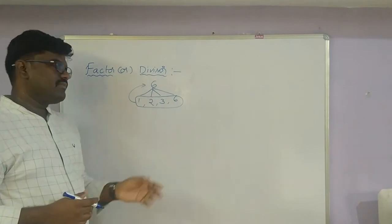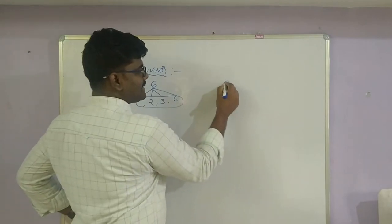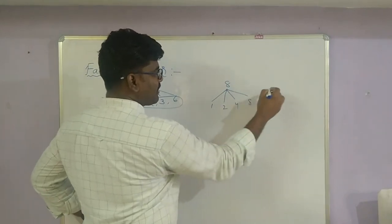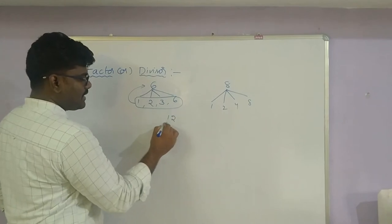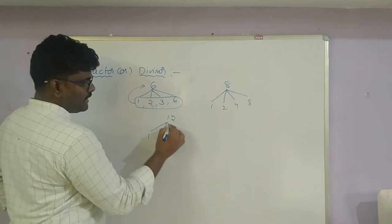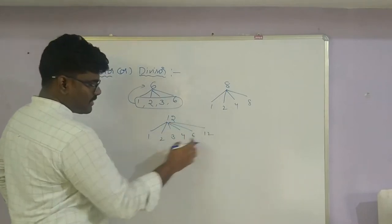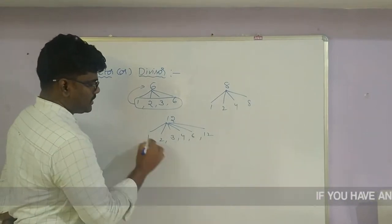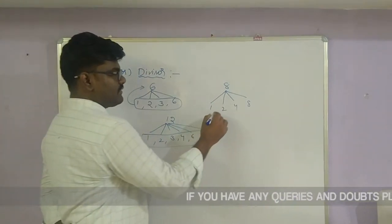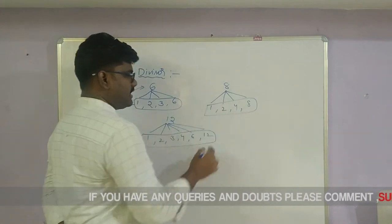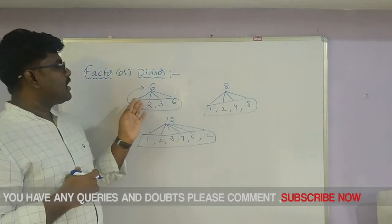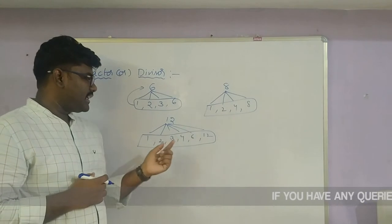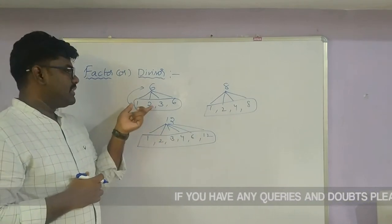How many factors are there? Four factors. In the same way, if they give another number, for example 8 — the factors of 8 are 1, 2, 4, 8. What are the factors of 12? 12 has factors 1, 2, 3, 4, 6, 12 — that means 6 factors. For 8, four factors. Factor is the same as divisor.